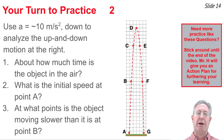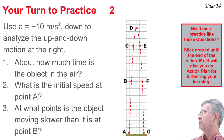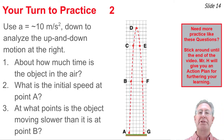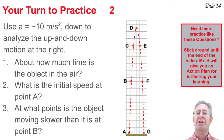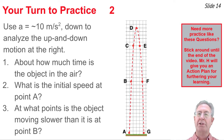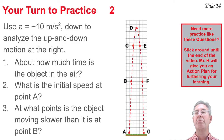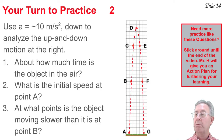Second practice problem: A ball is thrown upwards from the ground, and dots represent its location at one-second intervals. Using an acceleration of approximately 10 meters per second squared downward, determine: about how much time is the ball in the air, what is its initial speed at point A, and at what points is the object moving slower than at point B? Pause the video, find your answers, then press play.